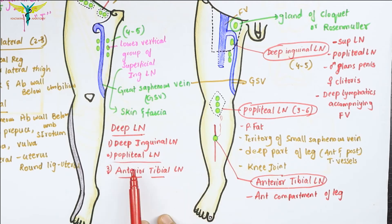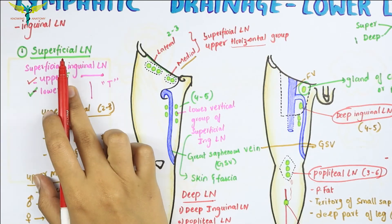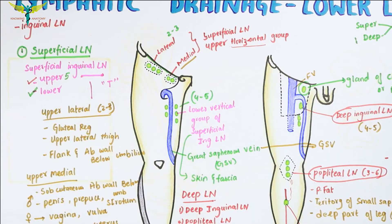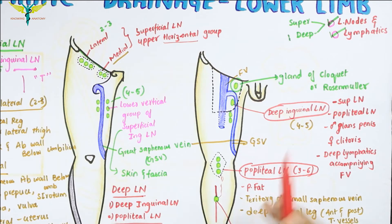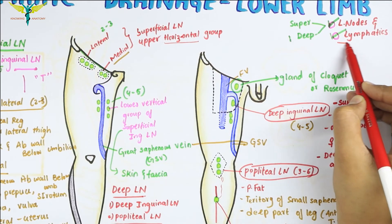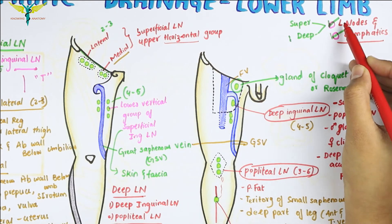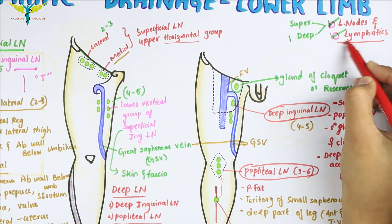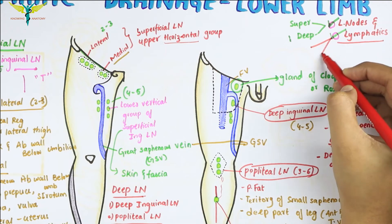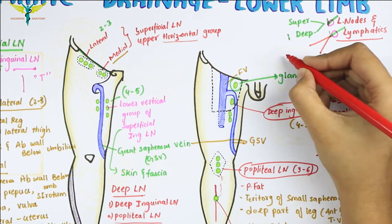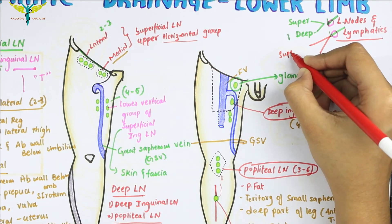These are the deep group of lymph nodes, and these are the superficial group of lymph nodes. Now let's talk about the lymphatics of the lower limb. Like the lymph nodes, the lymphatics are also classified into two groups: the superficial and the deep.